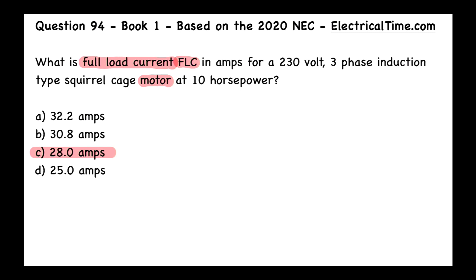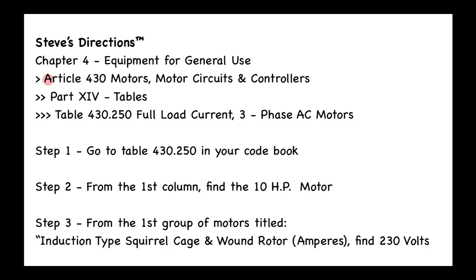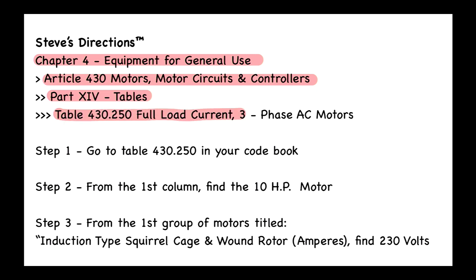Article 430 is called 'Motors, Motor Circuits, and Controllers,' and that's within Chapter 4, Equipment for General Use. We go all the way to the end of Article 430 and find Part 14, called 'The Tables.' We then look at Table 430.250, which covers the full load current for three-phase alternating current AC motors. Step one: go to Table 430.250 in your code book.